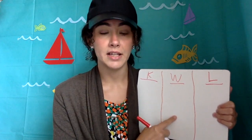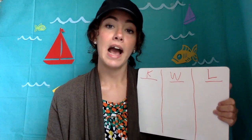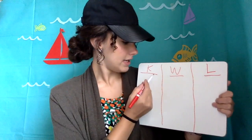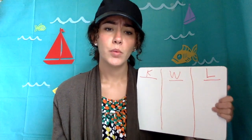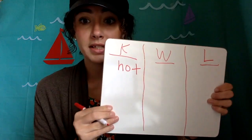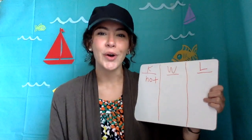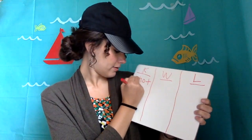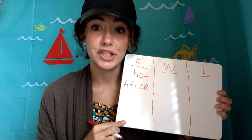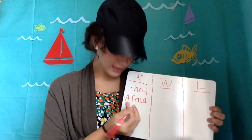You're going to fill out the K and the W before you read, then go watch the video. The K is what you know — so what do you know about Egypt? Miss Mason just gave you a little bit of information about how it is hot in Egypt, and we know that it is in Africa. Maybe you know some other facts about Egypt that you can write in here, but I know that it is hot and that it's in Africa.